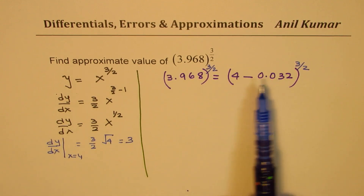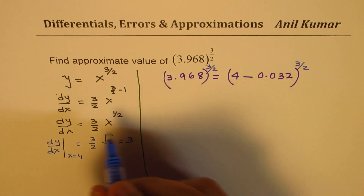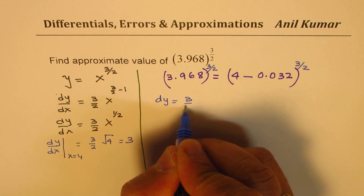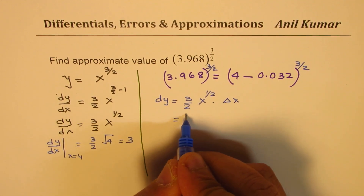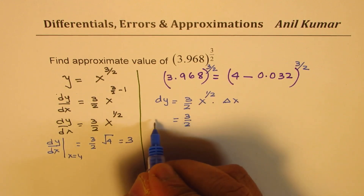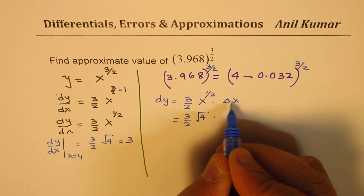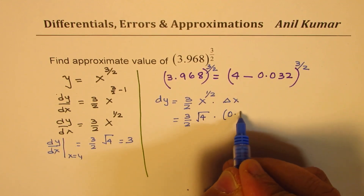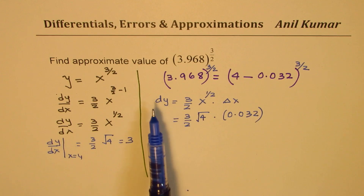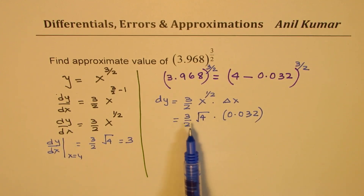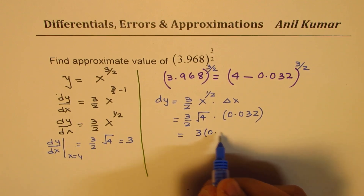Now, we need to approximate. From the derivative itself, we have the rate of change. We can write dy equals 3 over 2 times x to the power of half times the change in x. Substituting x equals 4: 3 over 2 times square root of 4 times 0.032. This is 3, so the change in y is 3 times 0.032. That gives us 0.096.